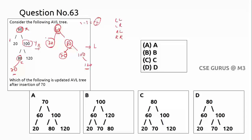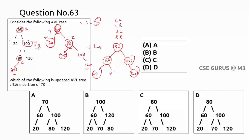Now performing the left rotation: with 20, 60, 80 as X, Y, Z — left-rotating makes 80 the new root. The left of 80 is 60, and 60's left child is 20. Whatever was the left child of 80 (which is 70) becomes the right child of 60. The result: 80 is root, left subtree 60 with children 20 and 70, right subtree 100 with child 120. This is the updated AVL tree after inserting 70, so option A is correct.